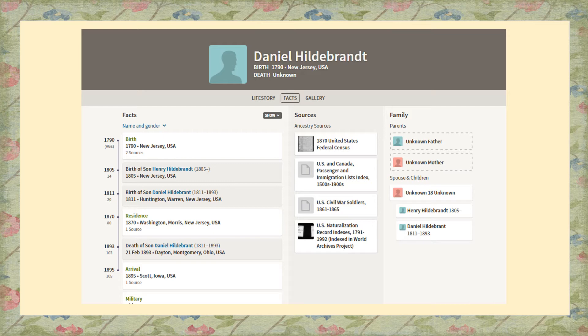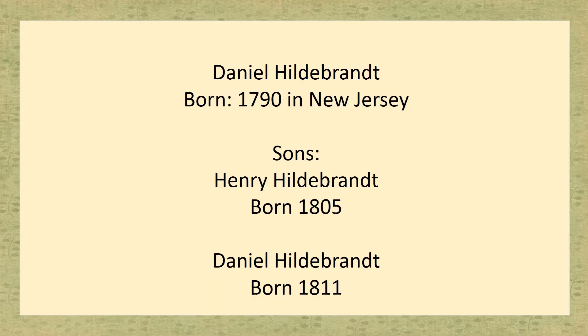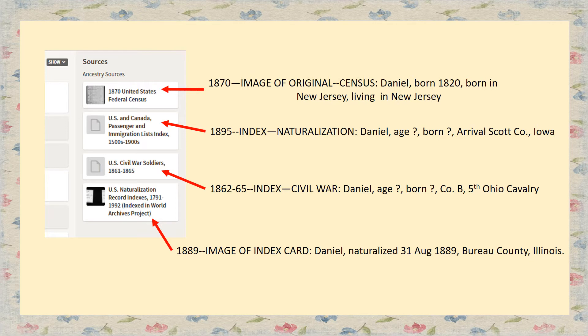Let's take the example of a user-submitted tree on Ancestry. This is Daniel Hildebrandt, and let's look at some of his details a little bit closer. According to this user-submitted tree, Daniel Hildebrandt was born in New Jersey in 1790. He had two sons: Henry Hildebrandt, who was born in 1805 when Daniel senior was 15 years old, and Daniel Hildebrandt Jr., who was born in 1811. Now this tree did have some sources attached to it, so let's look at those.